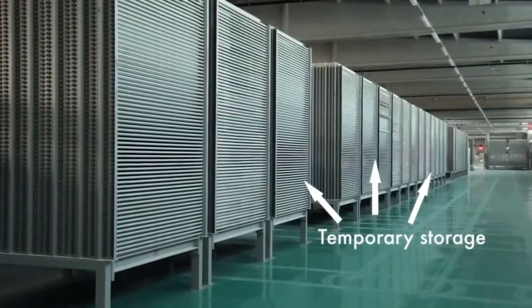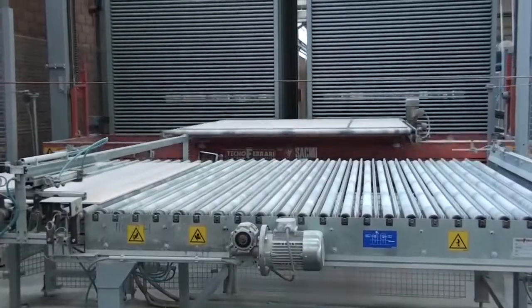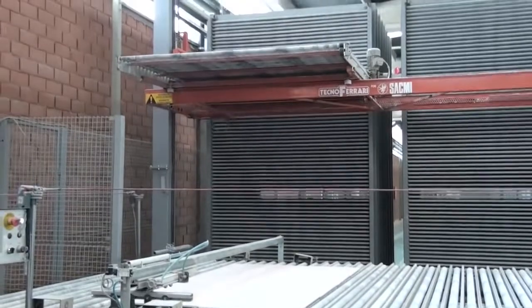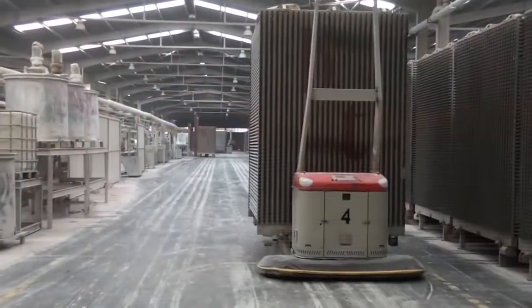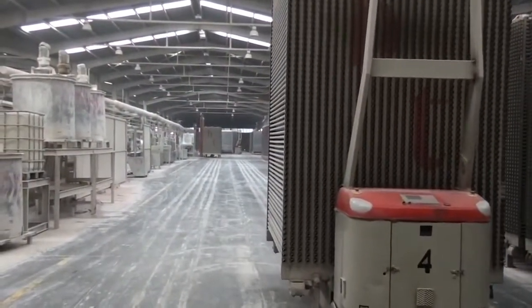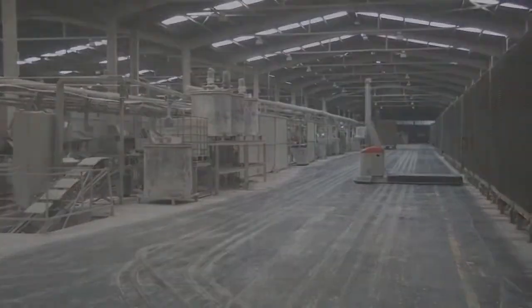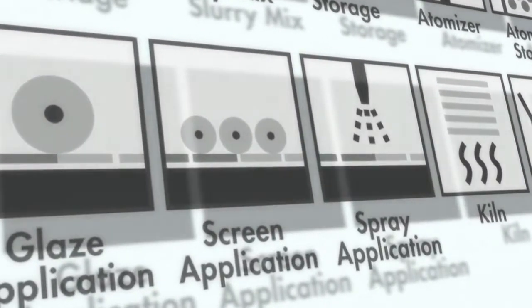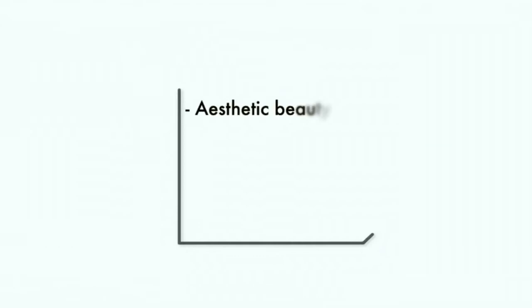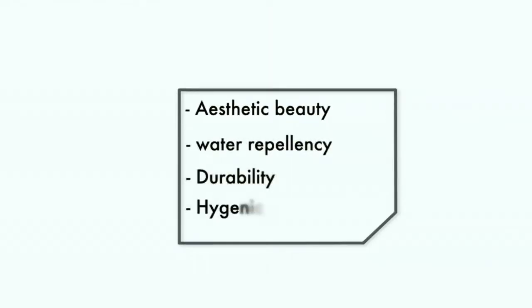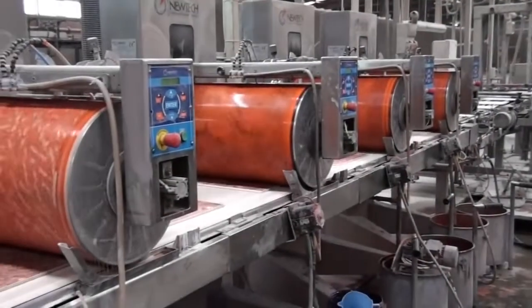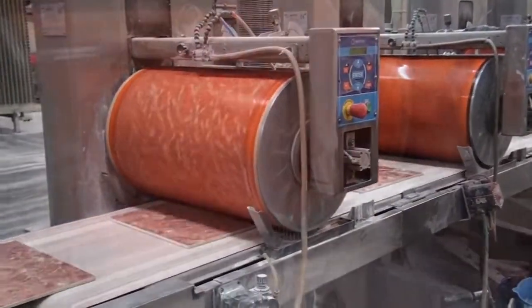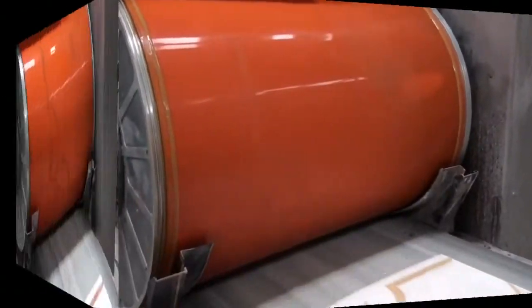Tiles are placed in temporary storage bins at various stages of the production process until they are required for different stages. This also allows time to adjust and repair equipment. Glazing and screening serve both a practical and artistic purpose. They form an important part of the finished product because they provide aesthetic beauty, water repellency, durability and hygienic properties to the tile. Roller screens are commonly used to apply design and color layer by layer to the bisque of the tile.